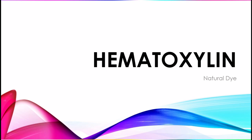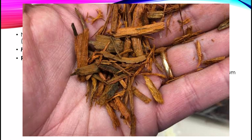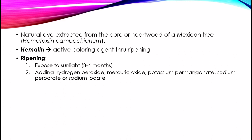Hematoxylene is a natural dye derived by extraction from the core or the heartwood of a Mexican tree known as Haematoxylin campechianum. It is by far the most valuable staining reagent used by the cytologist due to its powerful nuclear and chromatin staining capacity and its striking polychrome properties which may be produced with proper differentiation. Hematoxylene itself is not a stain. The active coloring agent is known as hematin, which is formed by the oxidation of hematoxylene in a process known as ripening.